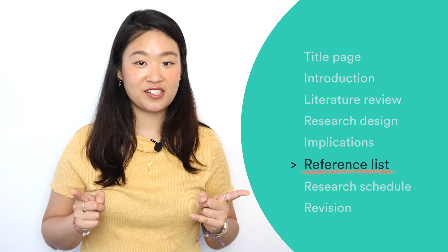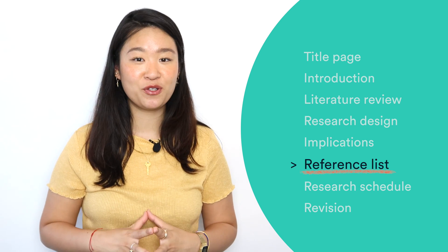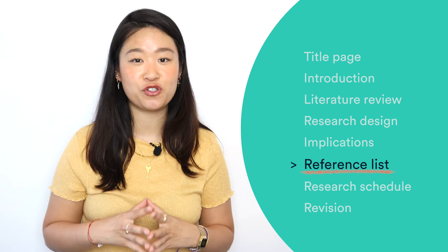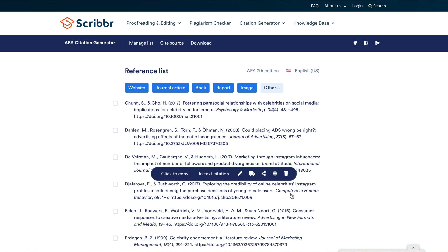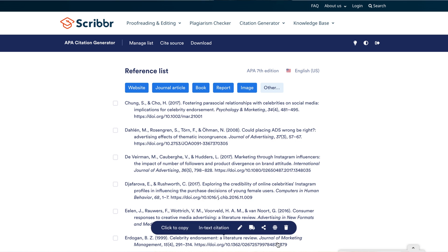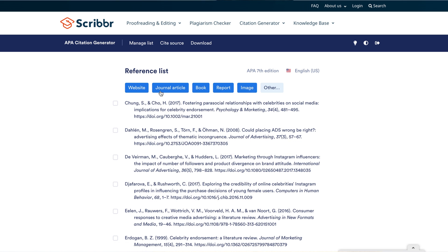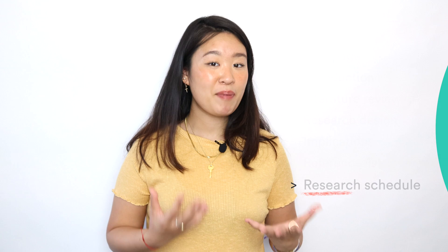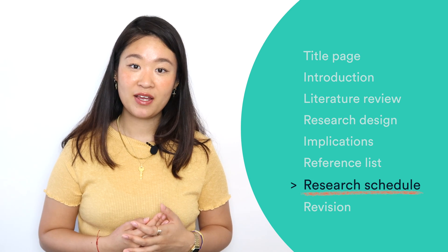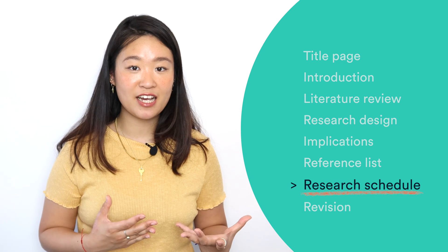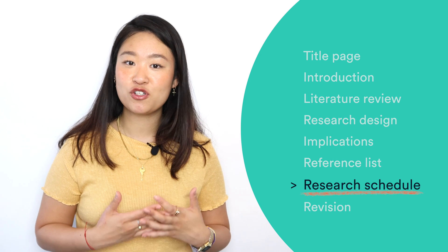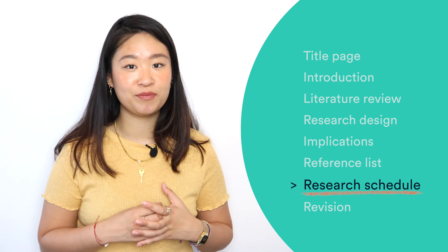Your research proposal must include proper citations and a reference list for every source you've used. It's important to keep track of your sources right from the beginning. You can create and manage your sources easily with Scriber's free citation generator. Depending on the requirements of your program, you might also have to include a detailed timeline and budget, which aims to show that your research is feasible.